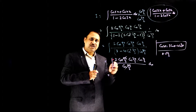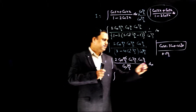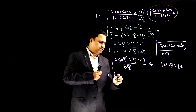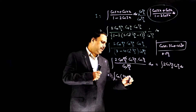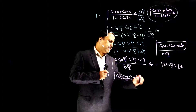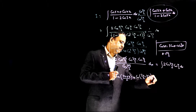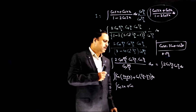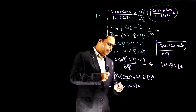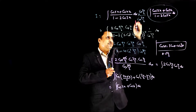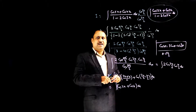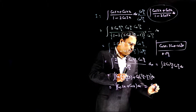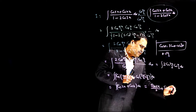Using the identity 2cosA·cosB = cos(A+B) + cos(A−B), we get 2cos(3x/2)·cos(x/2) dx. So this equals cos((3x+x)/2) + cos((3x−x)/2) = cos(2x) + cos(x), dx. This is a very easy integral. So the answer is sin(2x)/2 + sinx + C. Very simple form.